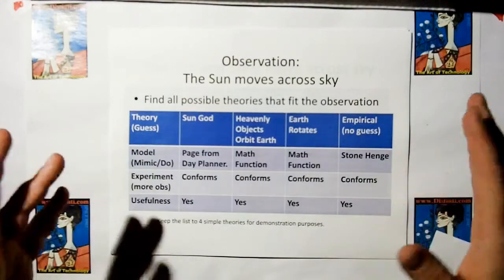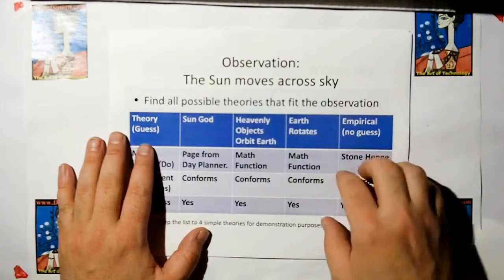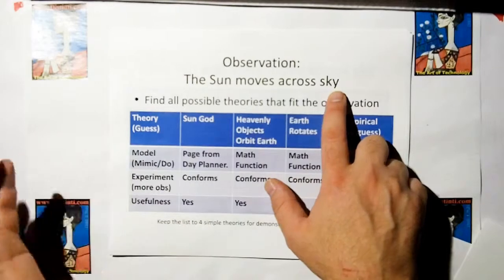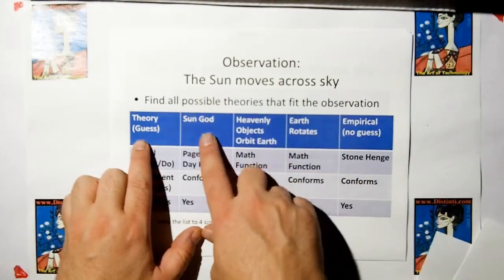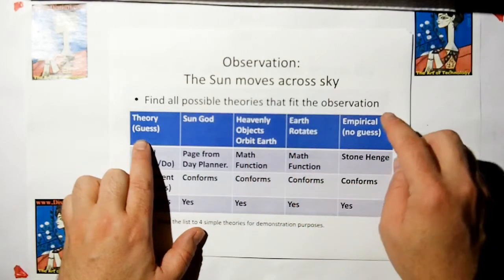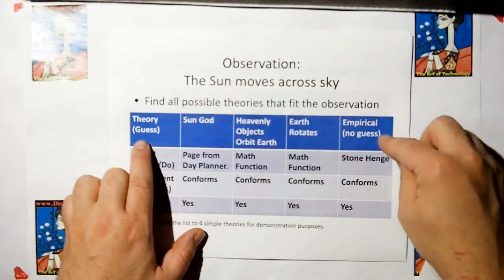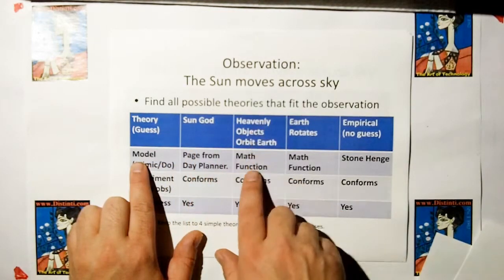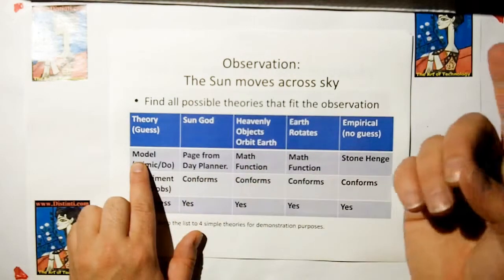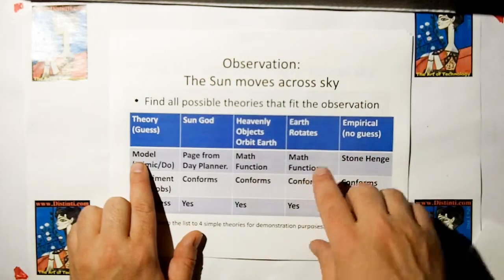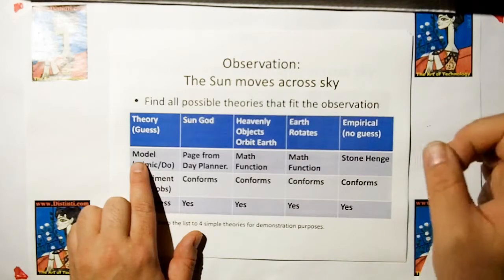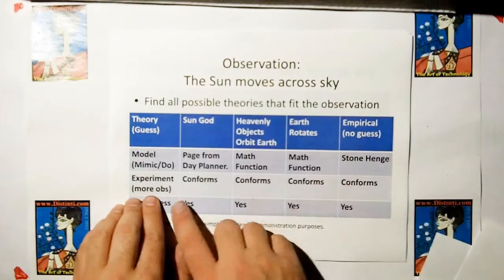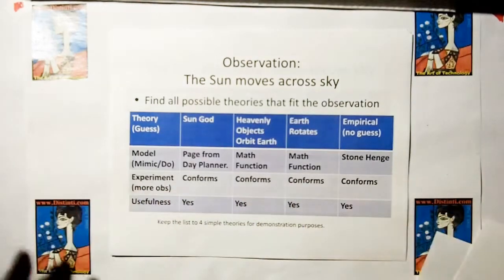Let's do a little example. Let's go back before the day of Galileo, before we knew that the Earth was round. We saw the sun moves across the sky. So what's our theory? We've got some multiple theories here. We've got the sun god, the heavenly objects orbit the Earth, that the Earth rotates, or we're just going to make an empirical model without trying to guess what the actual underlying theory is. What would the model look like? The sun god would be a page from the sun god's day planner. We'd have a mathematical model that shows heavenly objects orbiting. The Earth rotates - we're going to show in the model that the stars are stationary and the Earth is rotating. And Stonehenge, we're just going to put stones up where the sun goes. When we make some more observations, we're going to see that all these conform. So they're all useful.